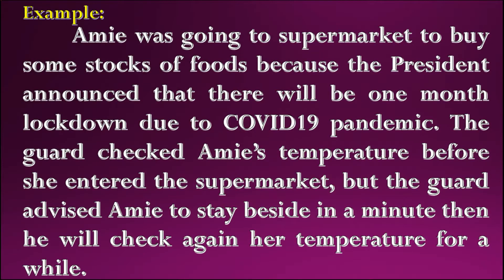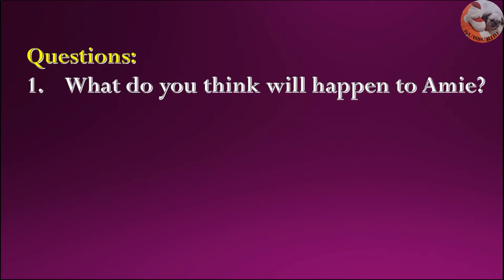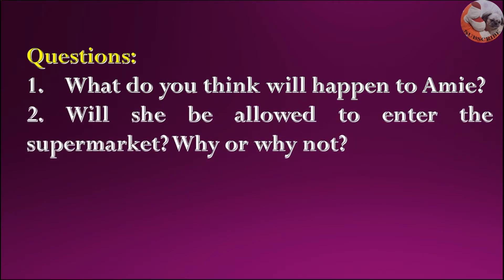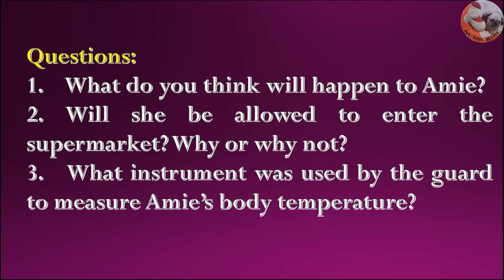Example: Amy was going to the supermarket to buy some stocks of food because the president announced there would be a one-month lockdown due to the COVID-19 pandemic. The guard checked Amy's temperature before she entered, but advised her to stay aside for a minute so he could check again. What do you think will happen to Amy? Will she be allowed to enter the supermarket? Why or why not? What instrument was used by the guard to measure Amy's body temperature?